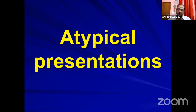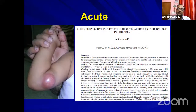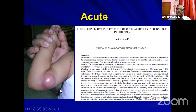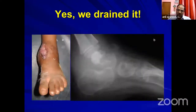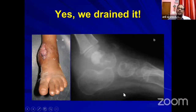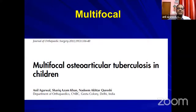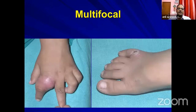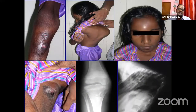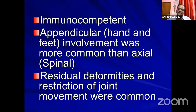There are several atypical presentations. The foremost is the acute presentation, where signs are present for just 10 to almost 28 days — you cannot distinguish between acute suppurative infection and tuberculosis. We were unaware of this entity and used to drain; but when the lesion didn't heal, we took an edge biopsy that came out as tuberculosis. Duration of symptoms can be anywhere from 4 to 28 days, and the diagnosis will be missed if you only send aerobic and anaerobic cultures.